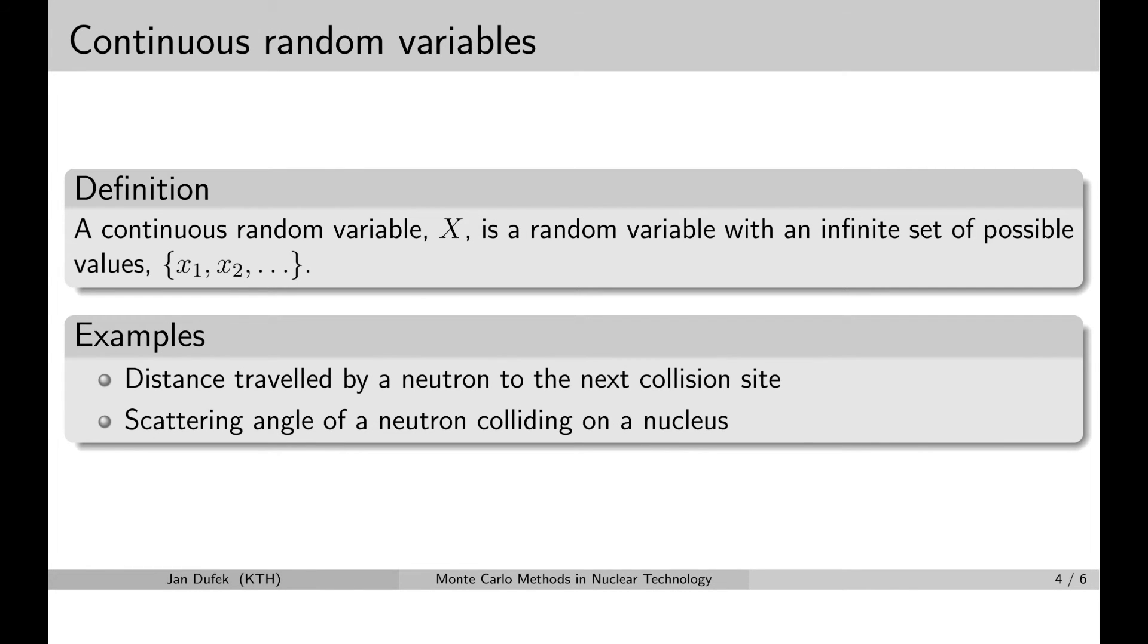Let's have a look now at the other group of random variables, the continuous random variables. A continuous random variable is a variable that can take on a value out of an infinitely large set of possible values. The number of possible values is not limited.